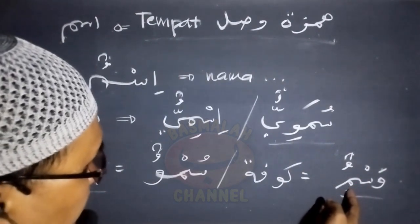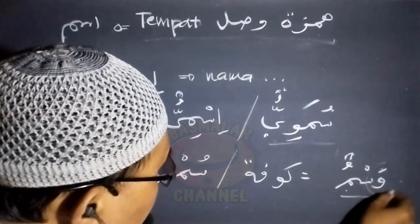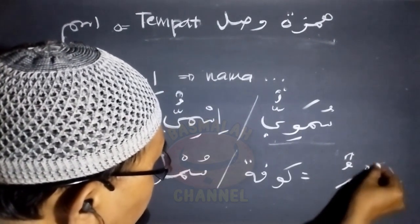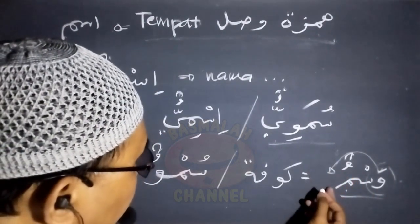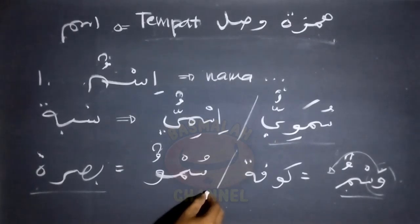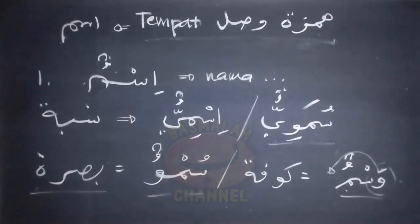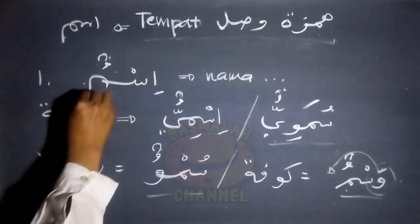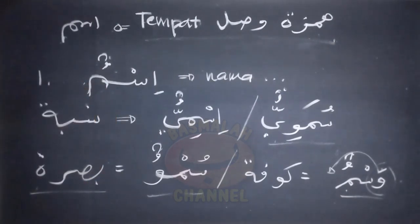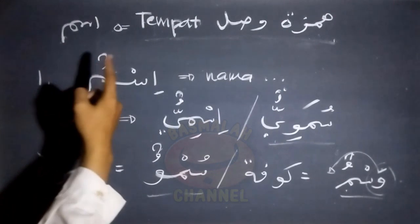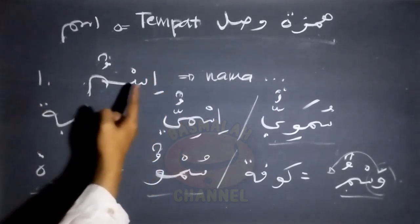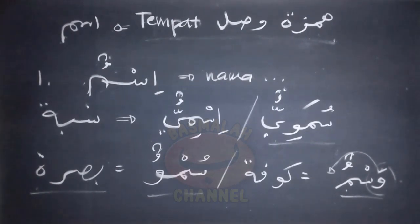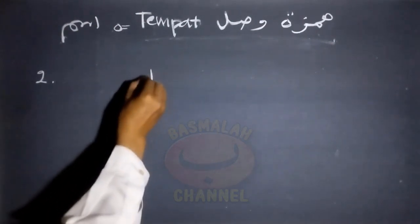Dari lafad wasmun dilakukan proses yaitu memindah huruf waw yang asalnya berposisi sebagai fa' fi'il dipindah ke paling belakang yang posisinya sebagai lam fi'il, sehingga wasmun pun berubah menjadi sumun. Jadi menurut ulama Kufah, waw yang ada pada lam fi'il ini pada asalnya berada pada fa' fi'il. Pada intinya, hamzah yang ada pada lafad ismun ini termasuk daripada hamzah wasol, di mana manakala lafad ismun berada di awal susunan kalimat maka hamzahnya dibaca, namun manakala berada di tengah kalimat hamzahnya tidak dibaca.